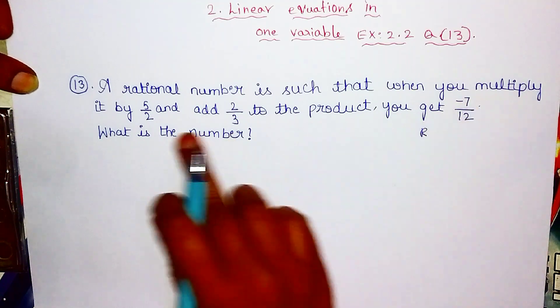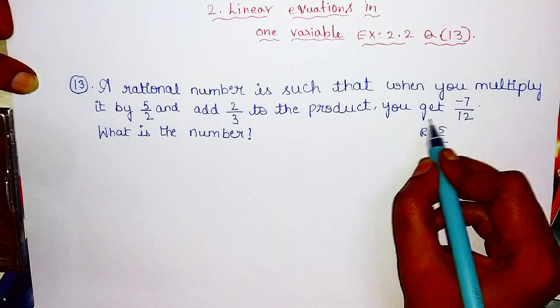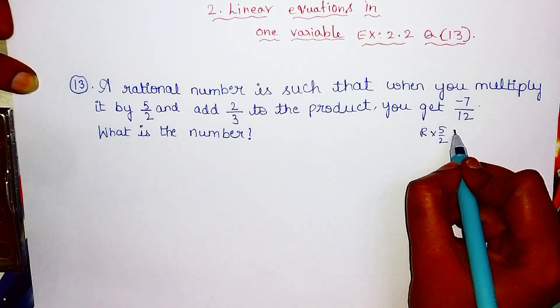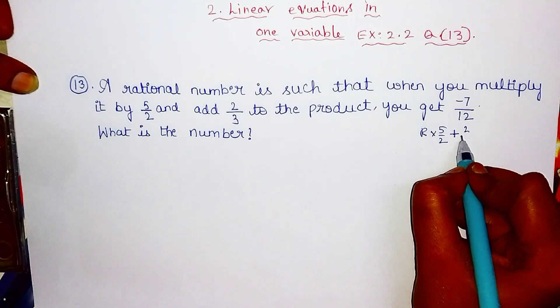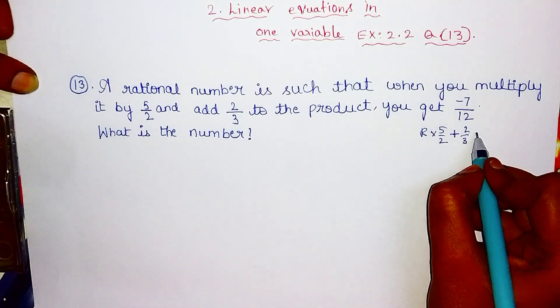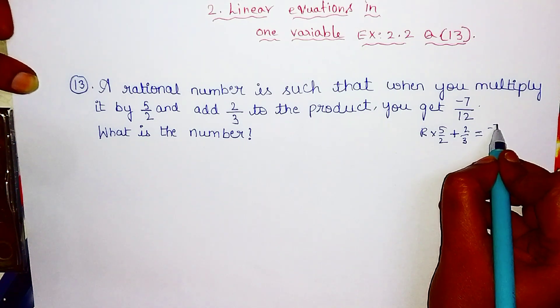Multiply it by 5 by 2, then add 2 by 3. We will get the answer. It is equal to minus 7 by 12.